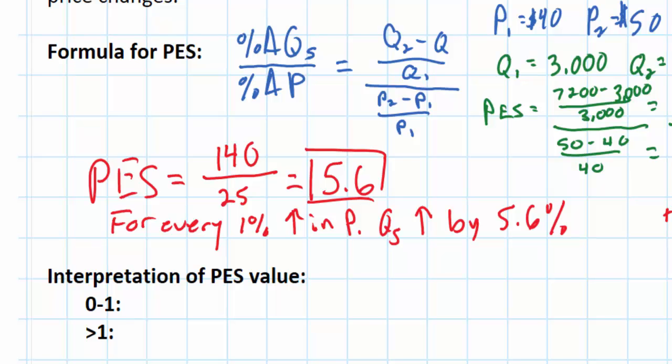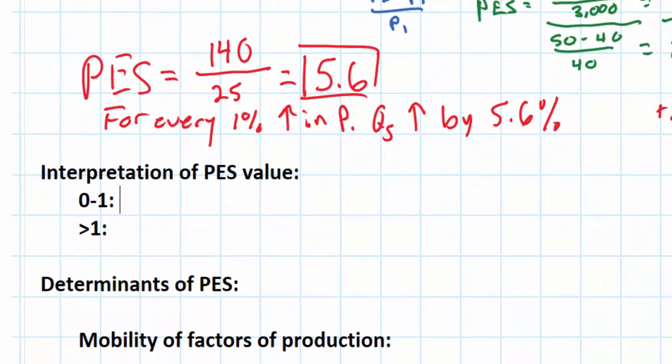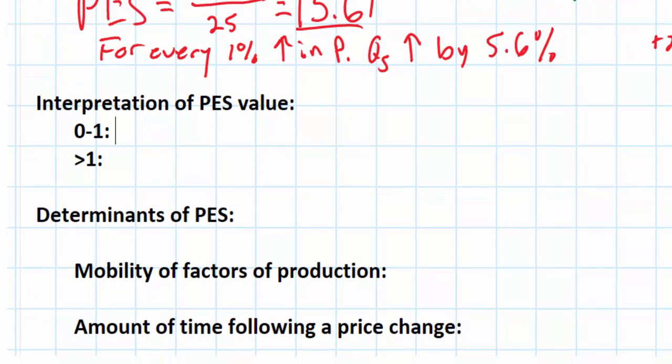The lowest possible value is zero. A price elasticity of supply of zero would indicate perfectly inelastic supply, meaning there will be no change in the quantity supplied no matter how much the price changes. Goods for which supply is perfectly inelastic are quite rare, but they do exist. Some goods simply exist in fixed amounts. For example, the number of seats in a football stadium is perfectly inelastic — no matter what price people are willing and able to pay, in the short term a football stadium can't increase the quantity of seats it can supply.